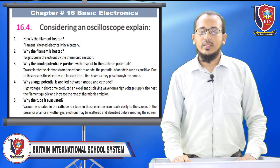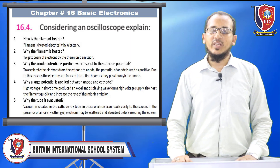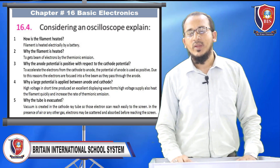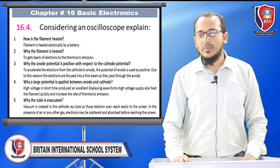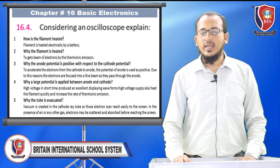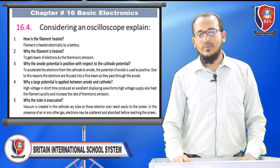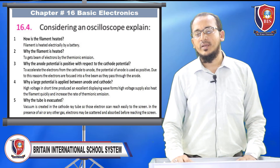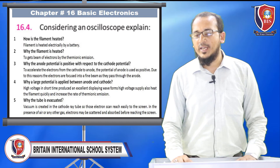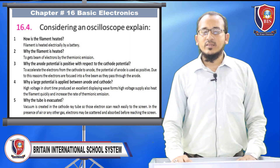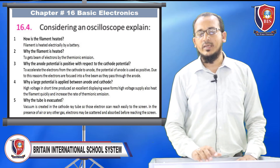Why is a large potential applied between anode and cathode? — High voltage in a short time produces excellent waveform display; it also heats the filament quickly and increases the rate of thermionic emission. Why is the tube evacuated? — A vacuum is created in the cathode ray tube so that electrons can reach the screen easily. In the presence of air or any other gas, electrons may be scattered or absorbed before reaching the screen.